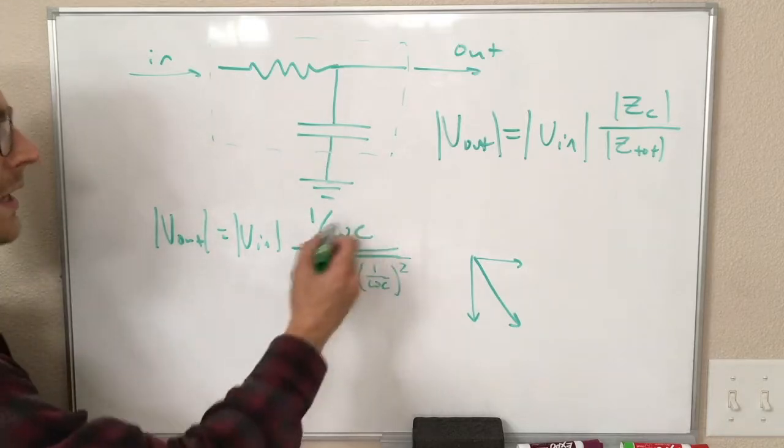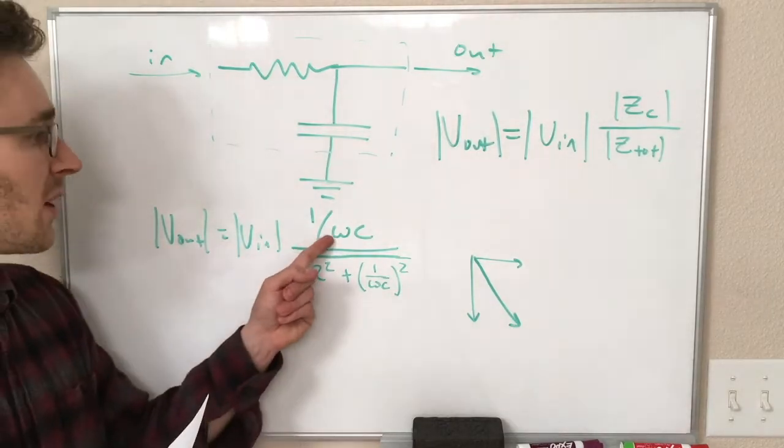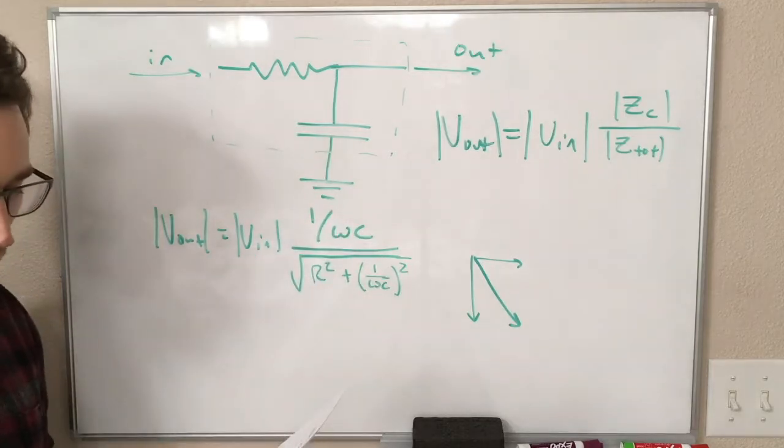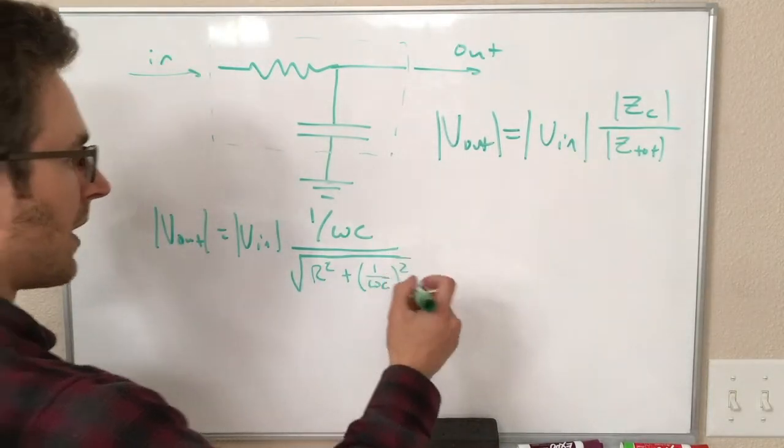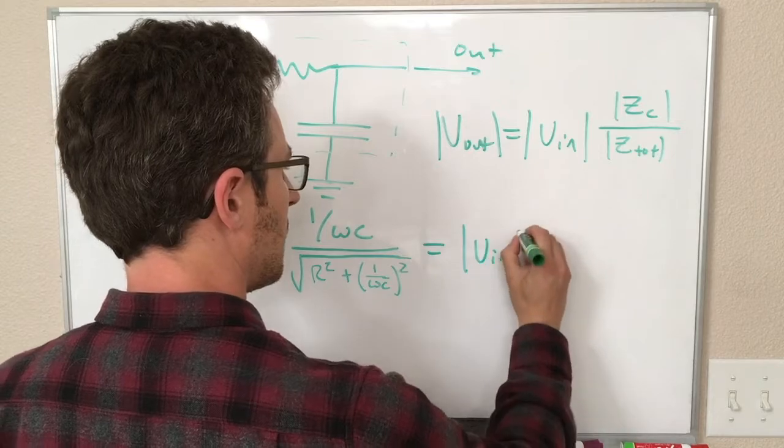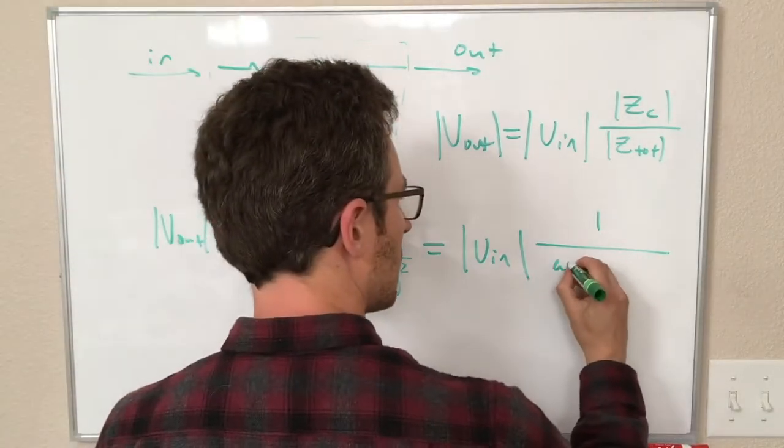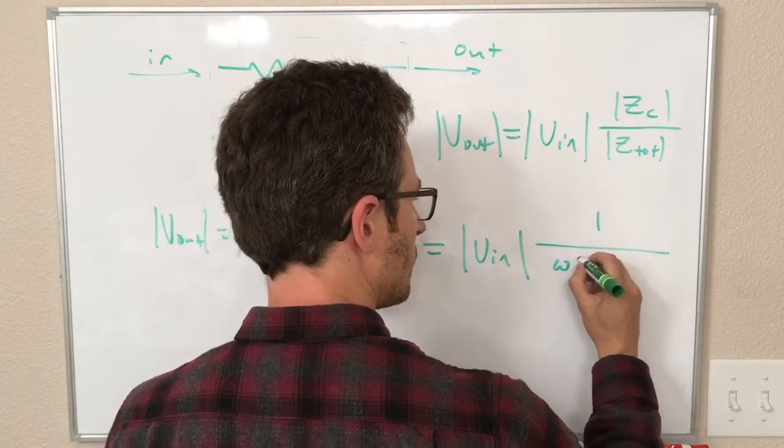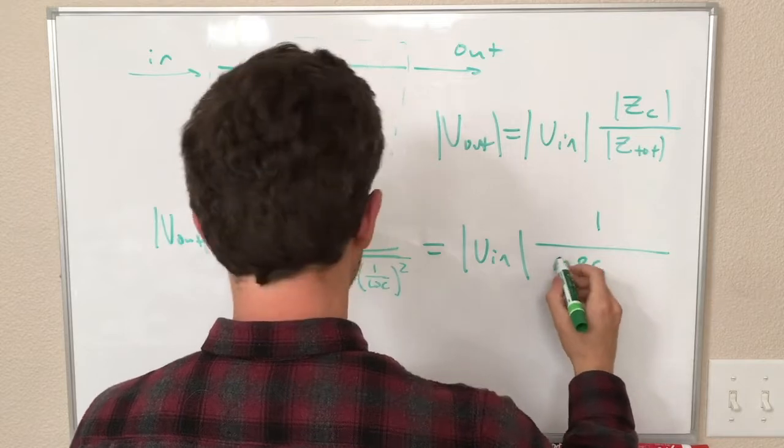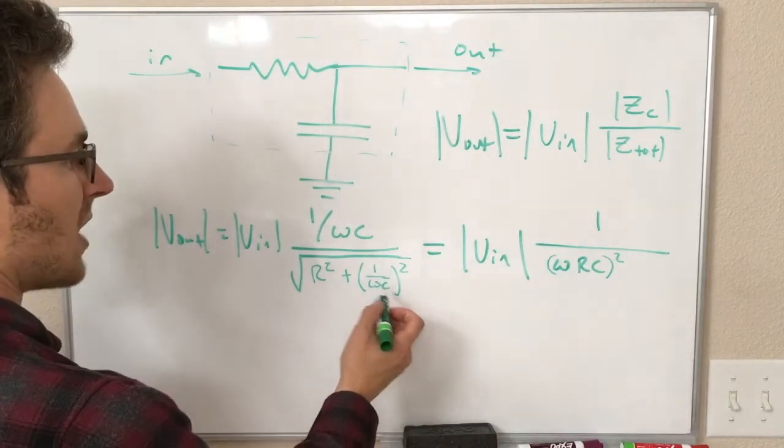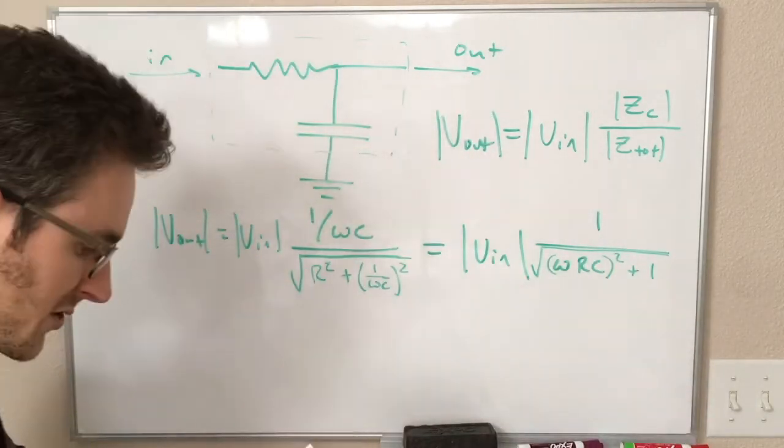This here is the gain of our circuit. Depending on what frequency we have, this is going to be some different ratio. Just to simplify, I'm going to rewrite this. I'm going to multiply the top and bottom by omega C, and then I'm going to get this. We're going to get one over... The R is going to be multiplied by omega C, and then I'm going to write omega RC. This is squared, plus 1 over omega C times omega C is equal to 1. That's a little nicer way of looking at that.